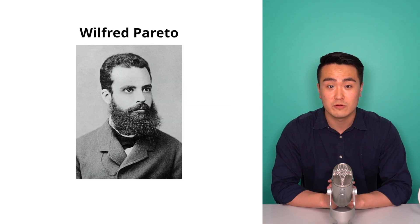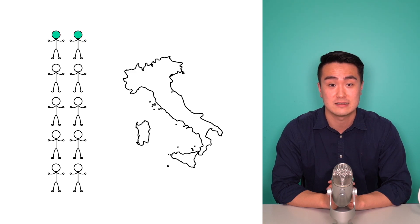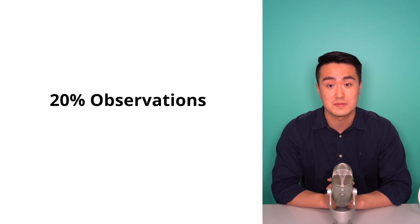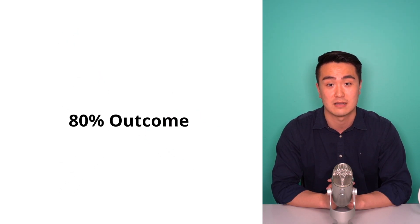It was coined after Wilfred Pareto, an Italian economist who observed that 20% of Italians owned 80% of the land in Italy. The Pareto principle then became this general idea that approximately 20% of observations account for 80% of the outcome.